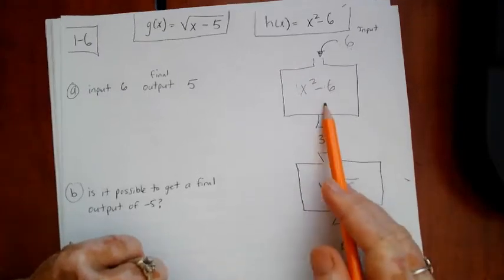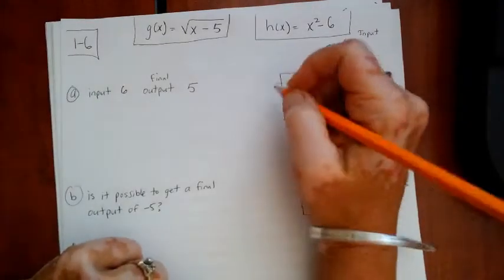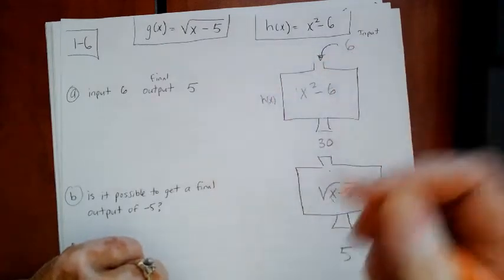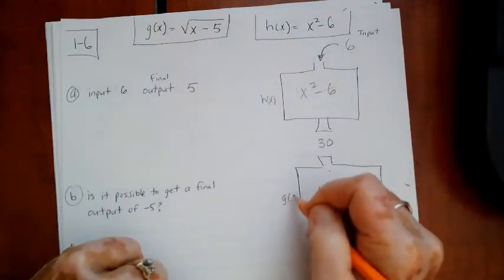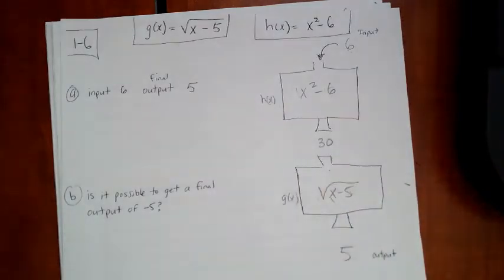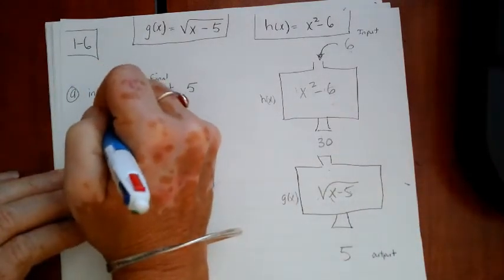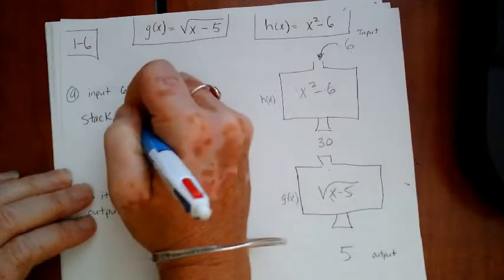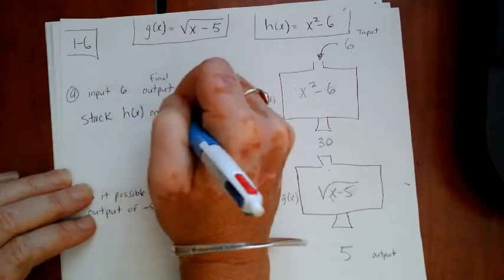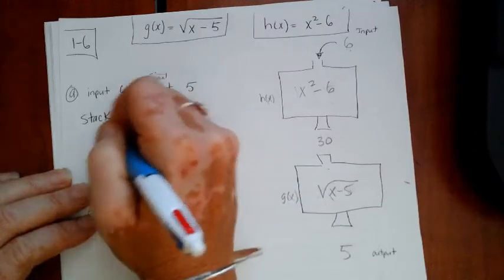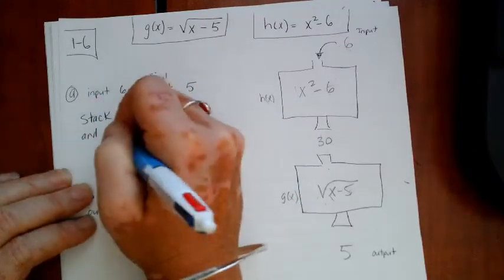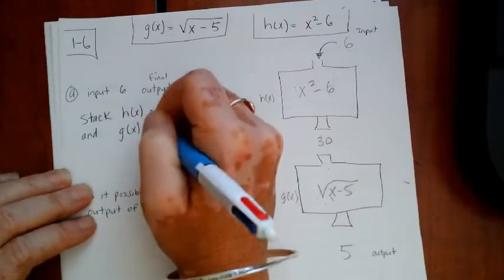So let's see how we did that. So that was with h of x on top and g of x on the bottom. That's what they're asking us. So the answer to letter A is you could write something like stack h of x on top and g of x on the bottom.